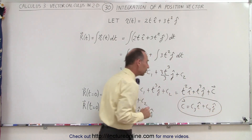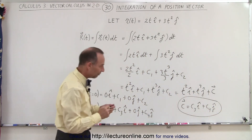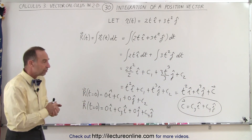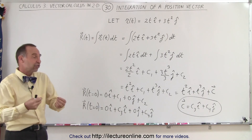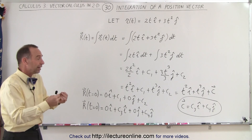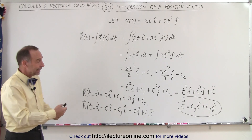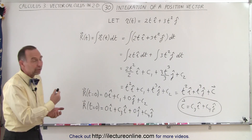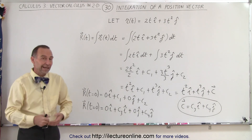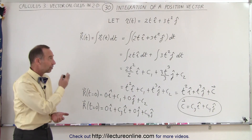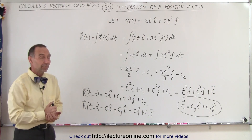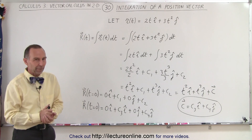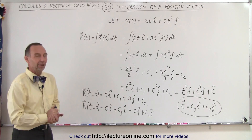Simply put, when we do an integral of a position vector, we get a constant of integration, and that constant of integration actually represents another vector with a component in the i direction and a component in the j direction. That's how we integrate position vectors, or any vector for that matter.